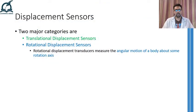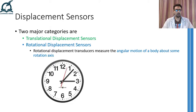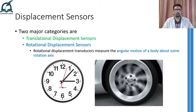To start the discussion on rotational displacement sensors, we need to understand what rotational motion is. Rotational motion is defined as angular displacement about some rotational axis, just like the needles of a clock rotating about a center point, or a car tire revolving as the car moves.